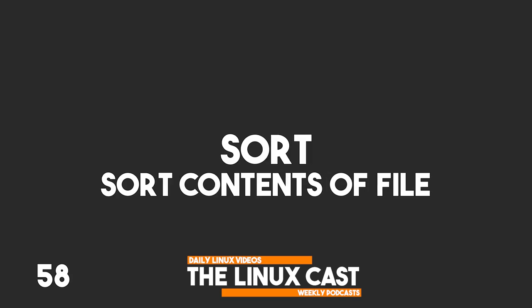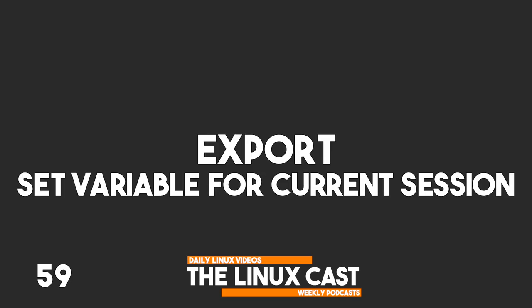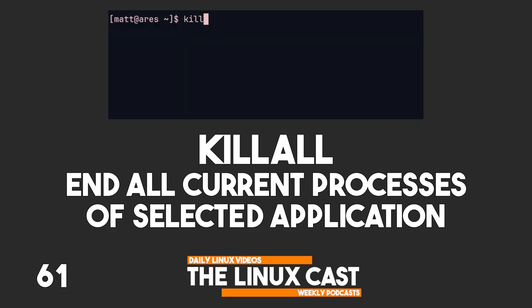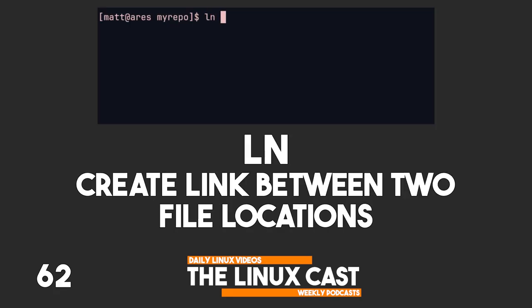sort sorts the contents of a file and displays them in the terminal. export sets variables in the current shell environment. ssh connects to outside connections securely. killall terminates all related processes of a given application. ln creates a link between one file and another, similar to shortcuts.